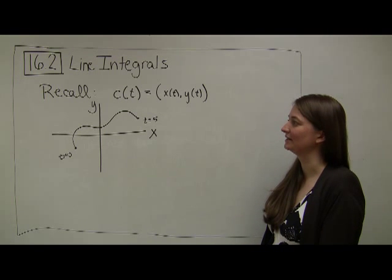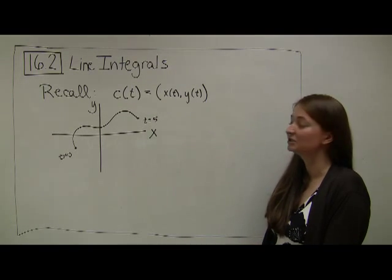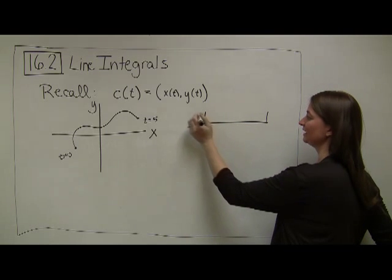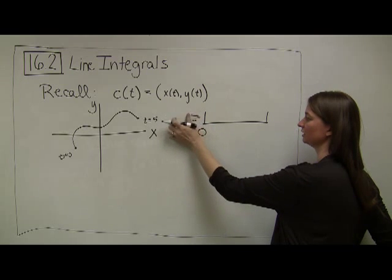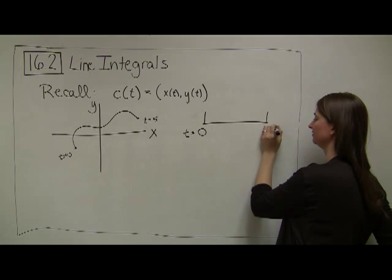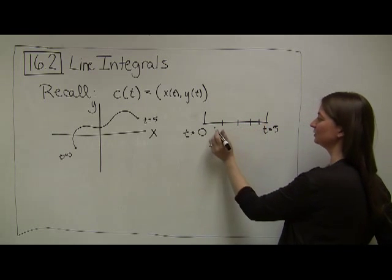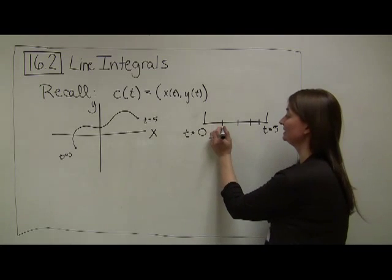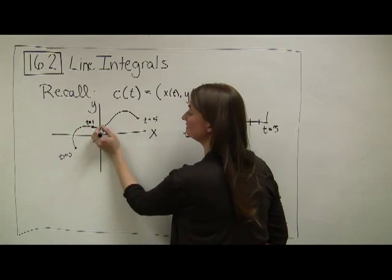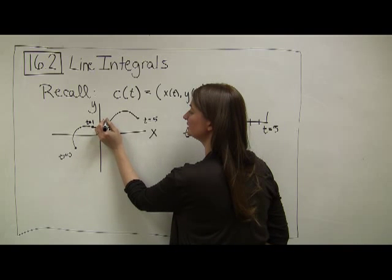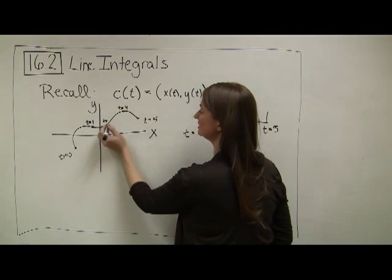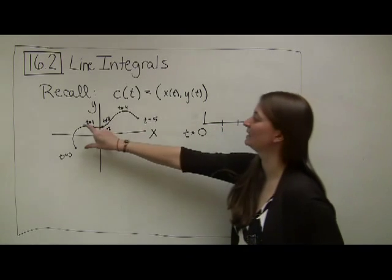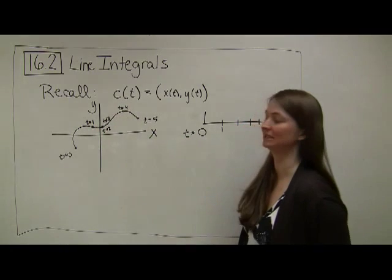One of the tricky things about paths is that they can have variable speeds. As t changes, if I break t up into equally spaced increments, that doesn't necessarily correspond to equally spaced increments along the line. Maybe at t equals one I made it all the way to here, then little tiny baby steps to t equals three, and t equals four is somewhere right around there. As I break t into little increments, that might not correspond with breaking up this line into evenly spaced increments.